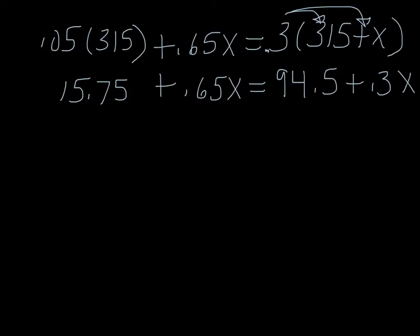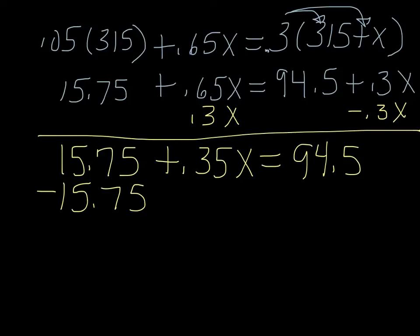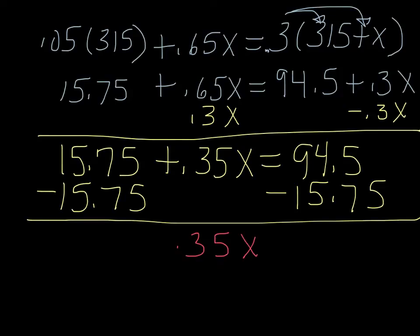Alright, I'm going to get all my variables on the same side. So subtract 0.3x. Bring down 15.75. It's going to be plus 0.35x equals 94.5. Then we'll subtract the 15.75 to get our variable by itself. And we get 0.35x equals 78.75.